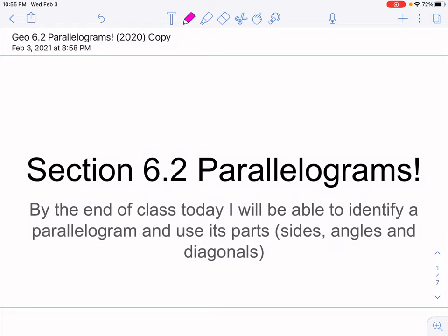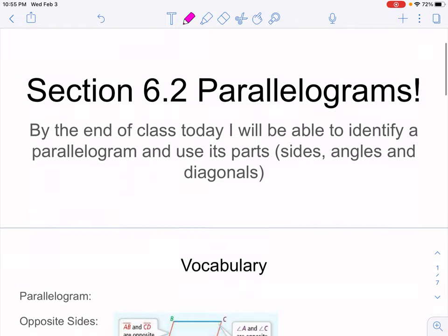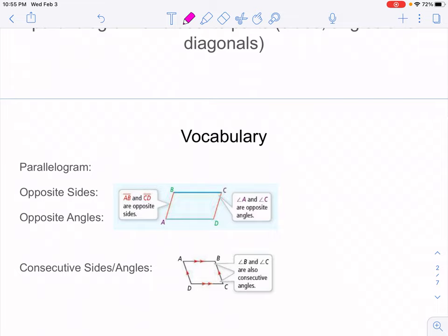Today we're going to talk about a certain kind of quadrilateral that has many special properties so we can do all sorts of interesting things with it. And that special kind of quadrilateral is a parallelogram. As you might guess from its name, parallelograms are related to parallel lines. In particular, a parallelogram is a quadrilateral with two pairs of parallel sides.